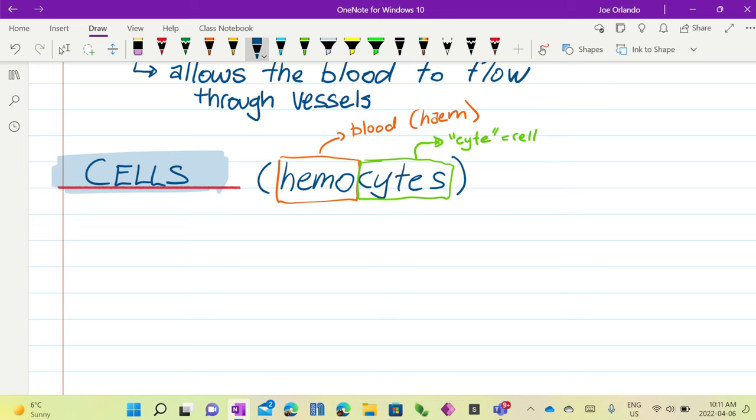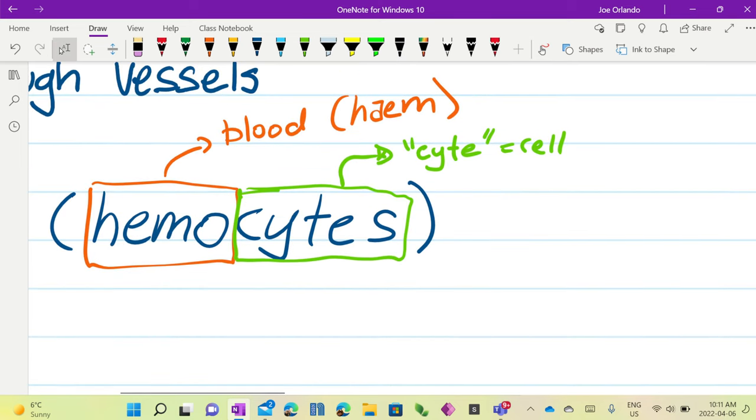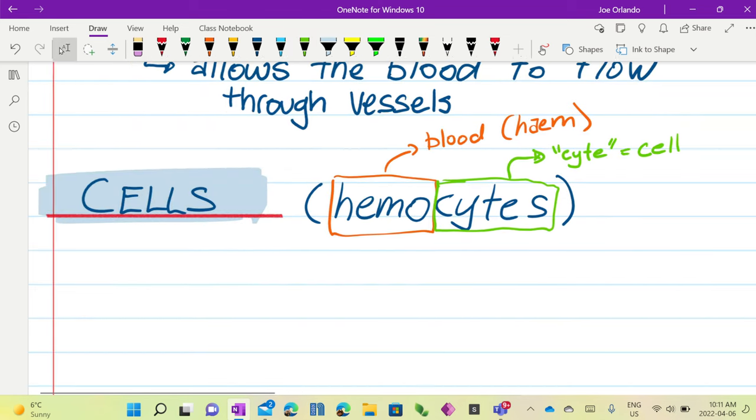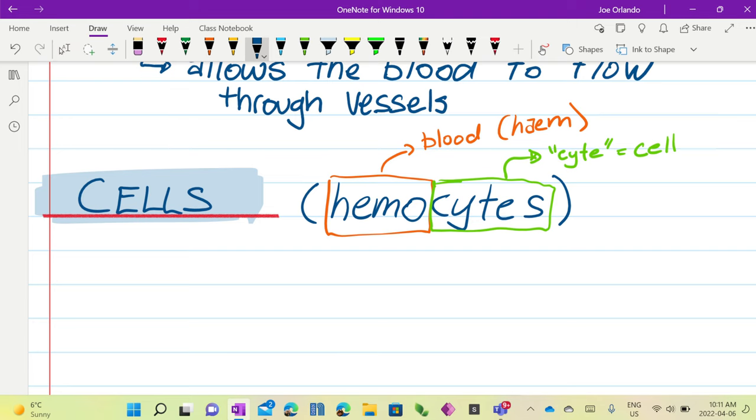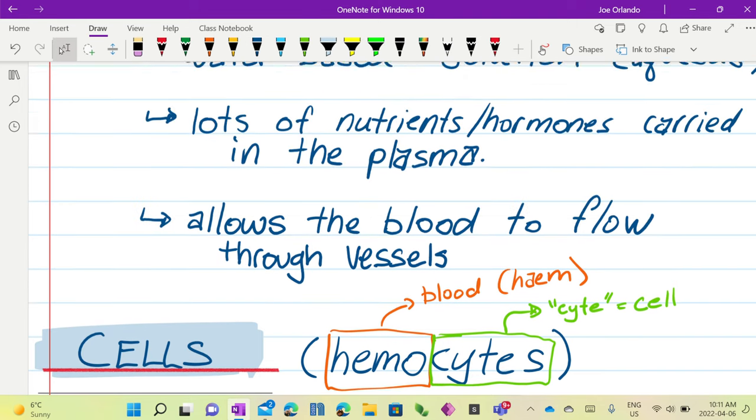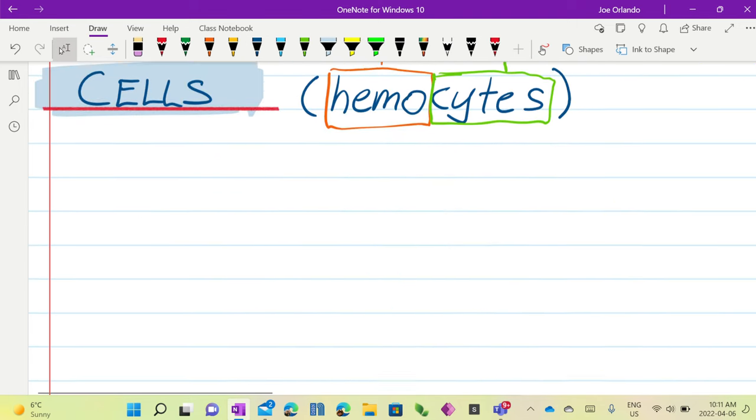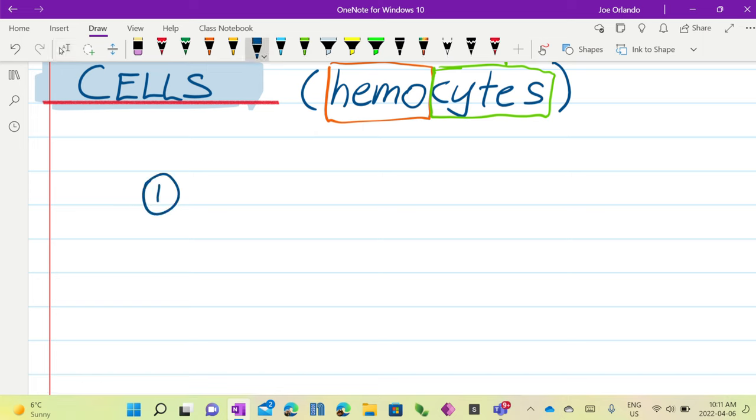What are the types of blood cells? What's the most common type of blood cell? Very good. Red blood cells.